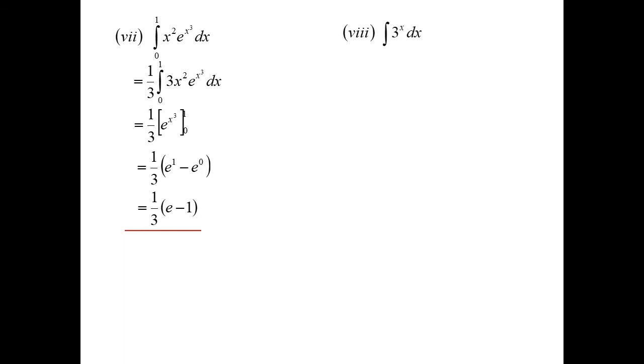Ah, the base is not e. All right, let's think about this logically. When we were differentiating, if the base was not e, we multiplied by the natural log of the base. We're now going back the other way, so it would seem logical to divide by the natural log of the base. So that'll become 3 to the power of x over the natural log of 3.